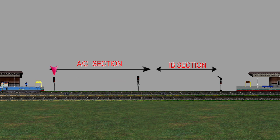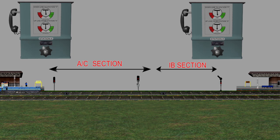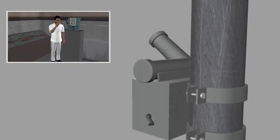The axle counter section is controlled by the last stop signal of the station and is interlocked with axle counters. The IB section extends from 400 meters after the IB signal up to the first stop signal of the next station in advance, and is controlled by the IB signal, which is interlocked with block instruments. The intermediate block signal is identified by an IB marker board and has a provision of a phone to communicate with the station master in rear.